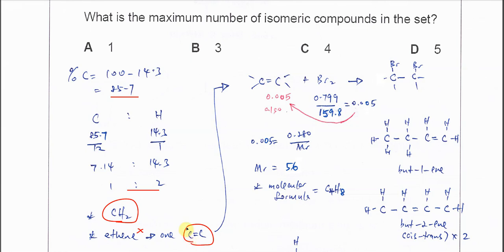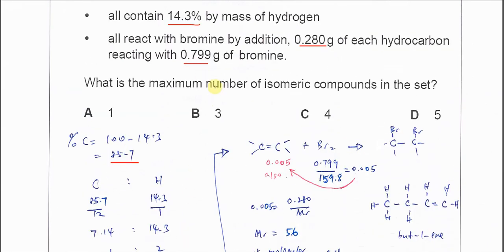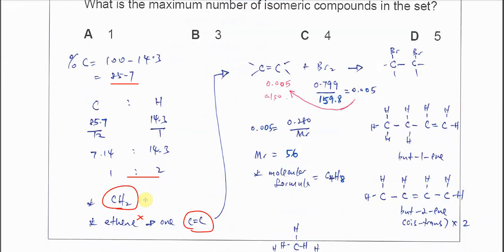Because the statement says bromine is added to the hydrocarbon, we know this compound definitely has one C=C double bond.